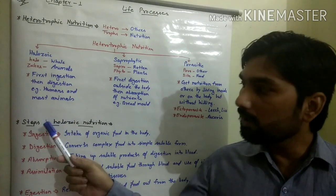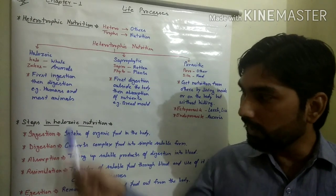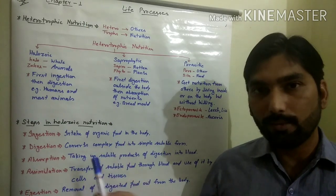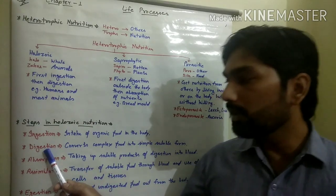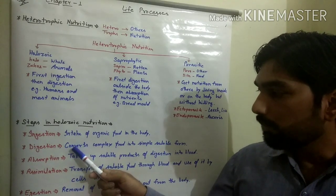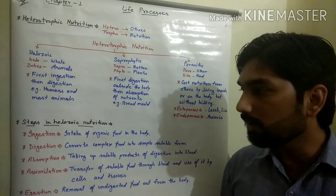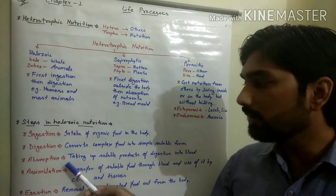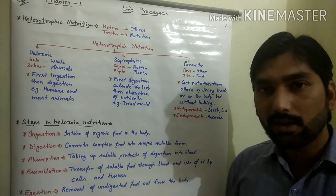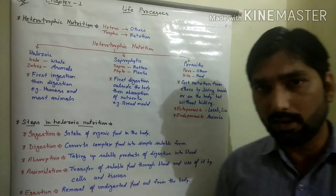Next we discuss the steps involved in holozoic nutrition, which is a complex process. The first step is ingestion — the taking of organic food into the body from the external environment. The second is digestion — the process of converting complex food into simple, soluble form so it can be absorbed by cells. Third is absorption — the process of taking up soluble products of digestion into the blood, which in humans occurs in the small intestine with the help of villi.